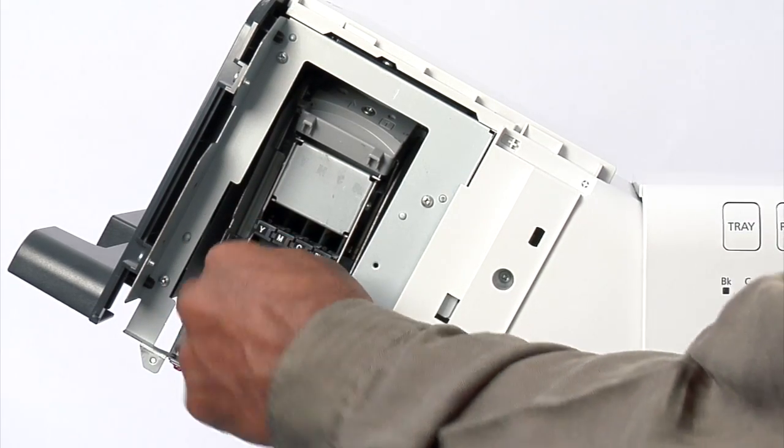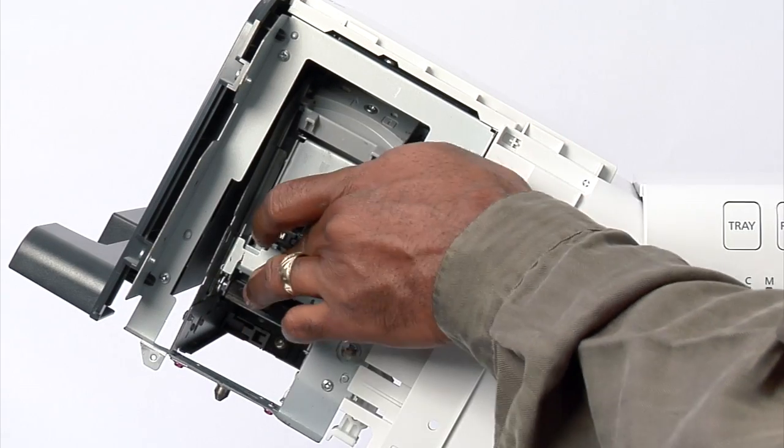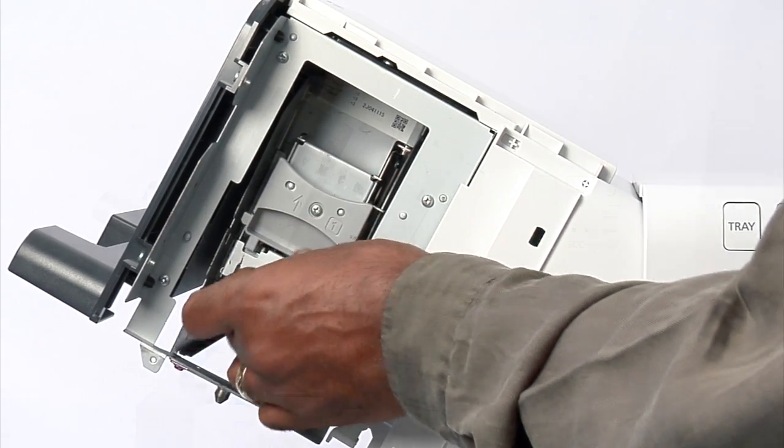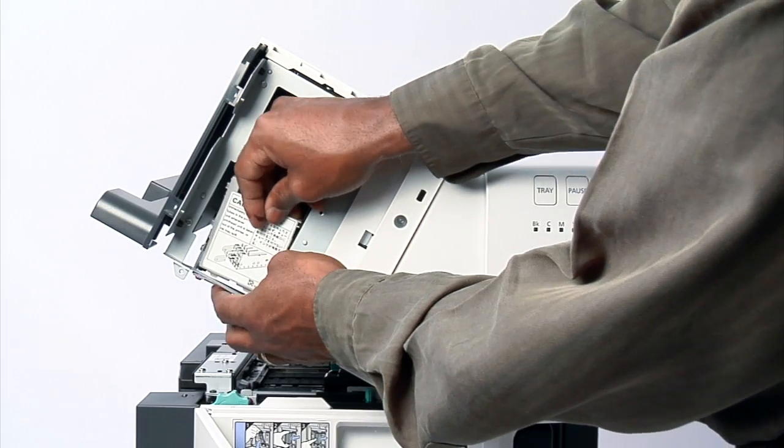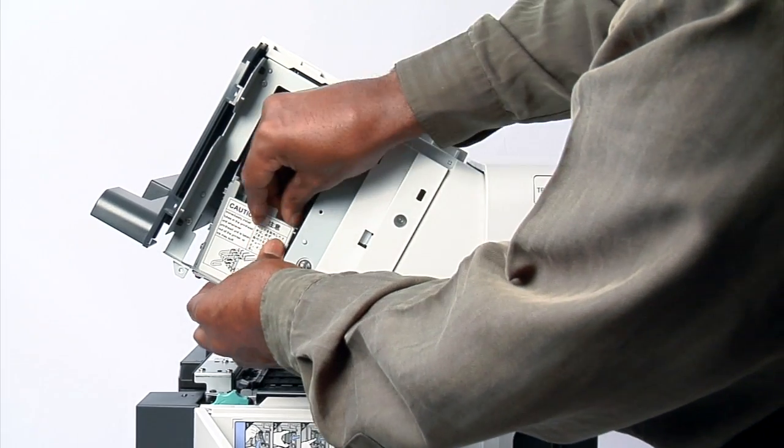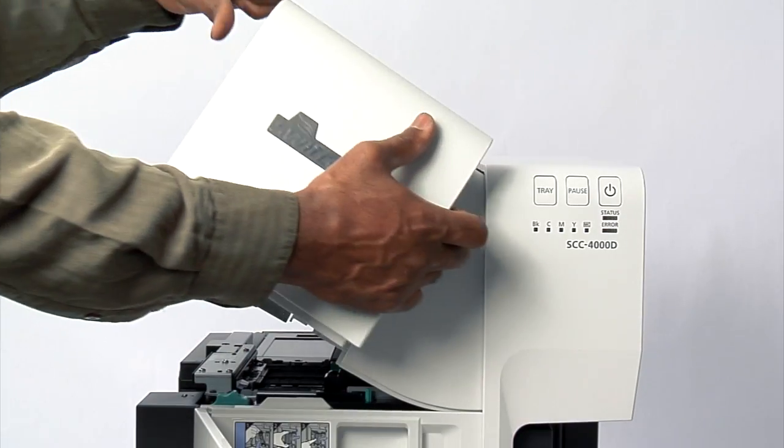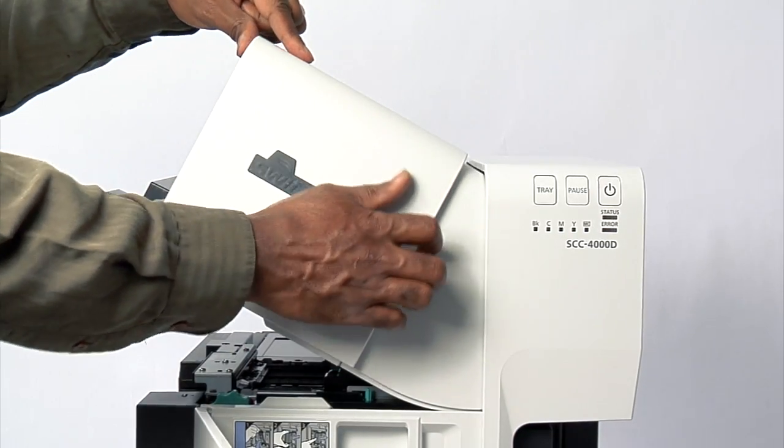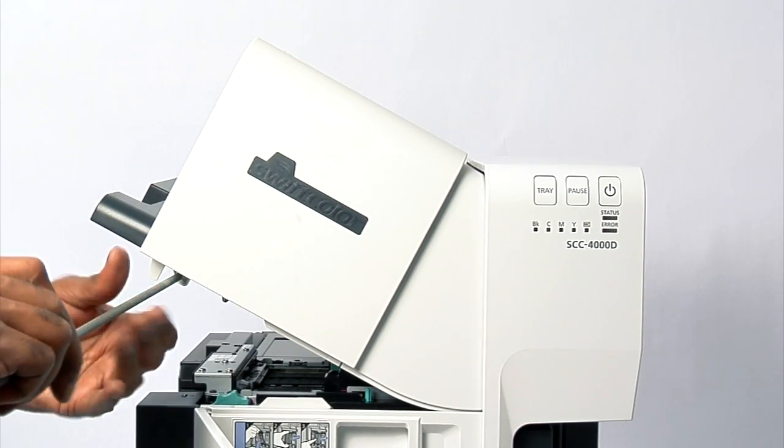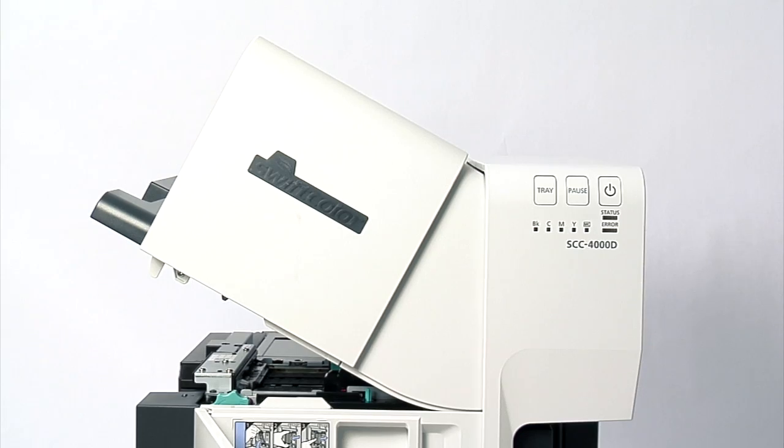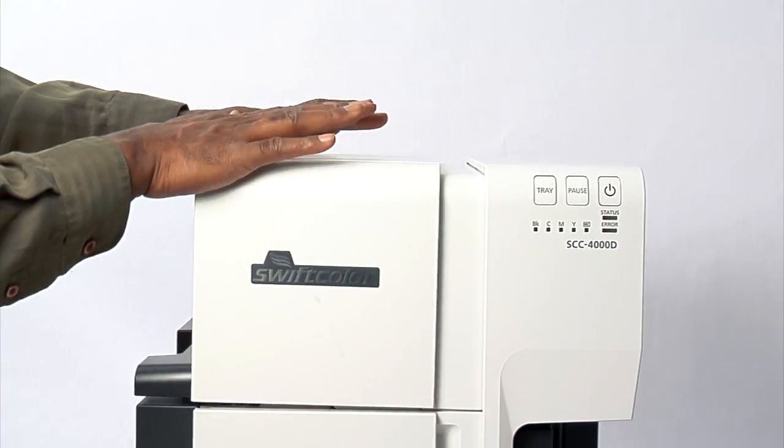Now, replace the blade cleaner. Lift the lower printhead release lever. Replace the printhead module cover. Replace the maintenance cover and secure with the screw. Close the top of the printer.